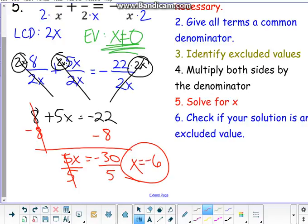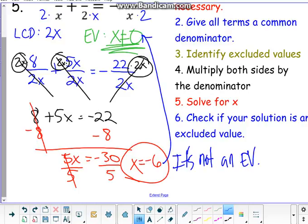The last thing we need to do is just double-check to say, hey, our solution, X equals negative 6. Was that our excluded value? No, it wasn't. So that means it's okay. Our solution is not an excluded value. So X equals negative 6 is a valid solution for this particular problem.